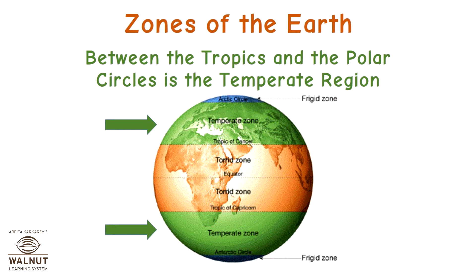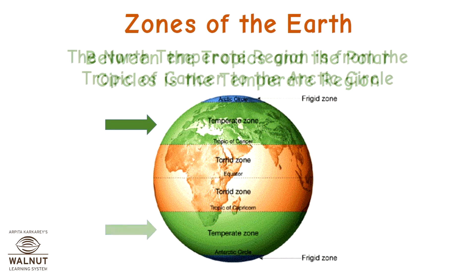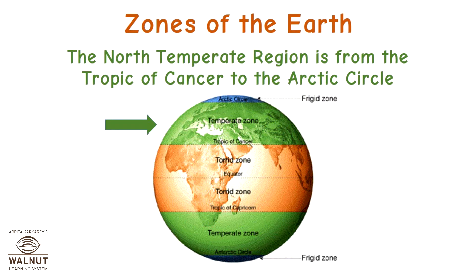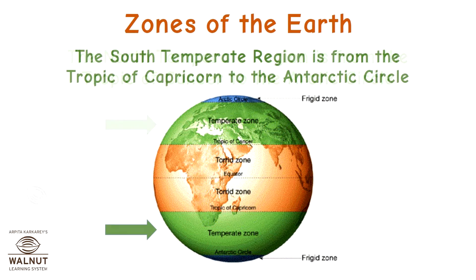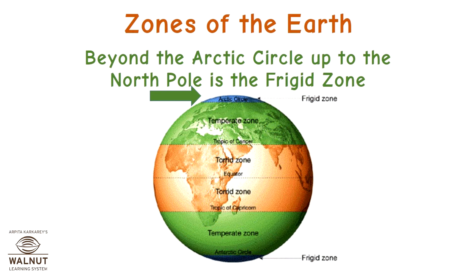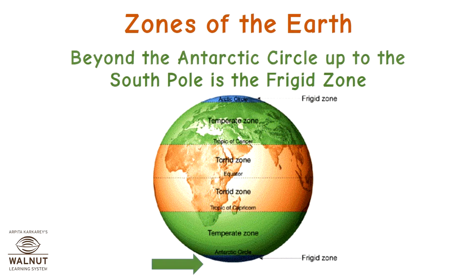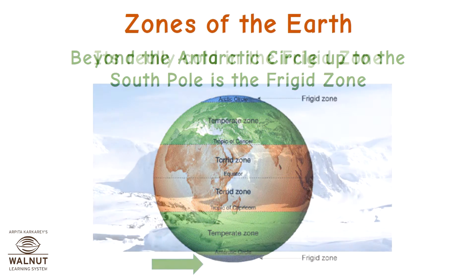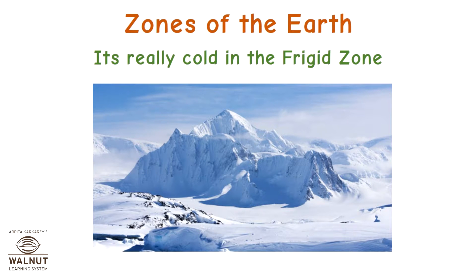Between the tropics and the polar circles is the temperate region. The north temperate region is from the Tropic of Cancer to the Arctic Circle, and the south temperate region is from the Tropic of Capricorn to the Antarctic Circle. It's not too hot or too cold in the temperate zone. Beyond the Arctic and Antarctic Circles up to the poles is the frigid zone, where it is really cold.